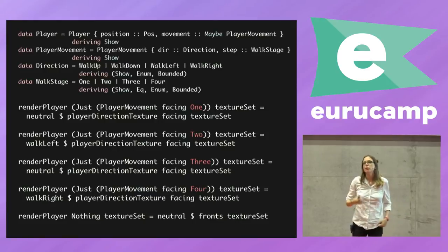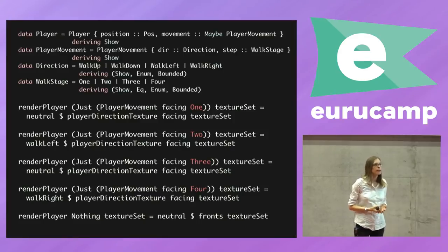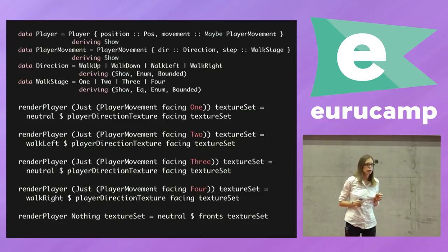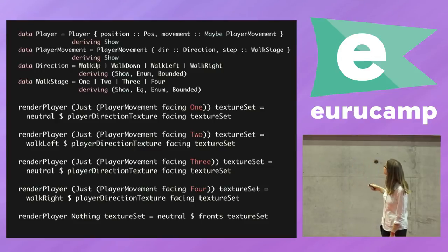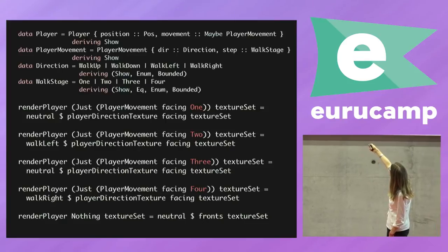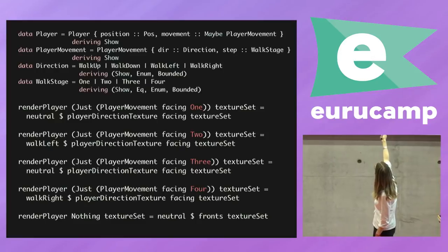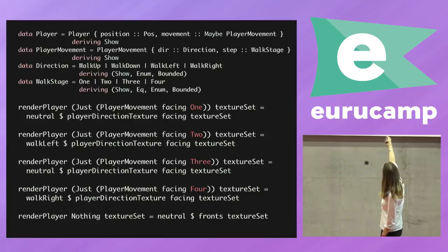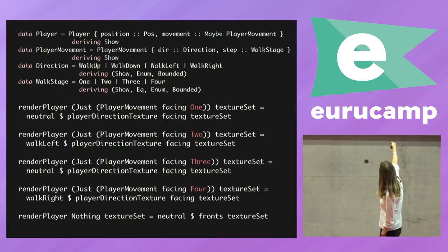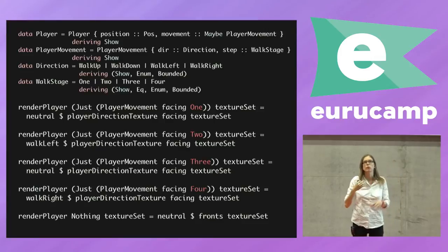So the thing is, your state changes a little bit — you have to not only keep track of the state of the game and where your character is, but also which stage of the animation it's in. In my very simple walking animation, I define a walk stage, which becomes part of the state. And then when I render the player, I have four stages and it cycles through that walking motion every time.